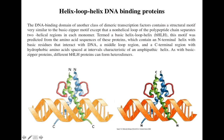One of the two alpha helices — for example, the C-terminal alpha helix — is the one which recognizes and binds to the DNA, recognizing a specific DNA sequence. The other helix is utilized for dimerization with another monomer. These proteins generally exist as dimers. The same is true for leucine zipper motifs as well, which this is also very similar to, with the exception of this loop which is not found in leucine zipper motifs.